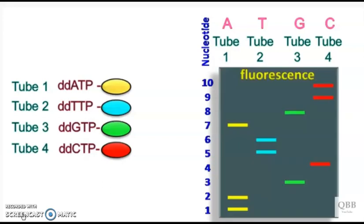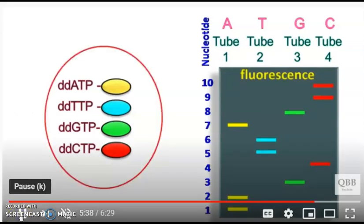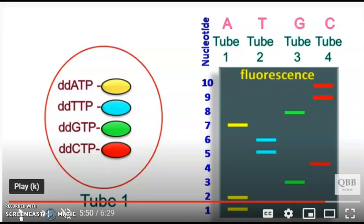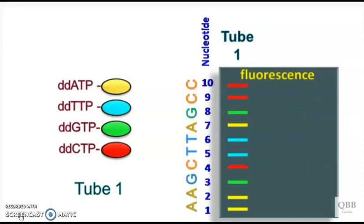As each of the ddNTPs show their own fluorescence, it is possible to carry out the reaction in one single tube rather than four tubes. Chain termination reaction would result if ddNTP is incorporated in the DNA.